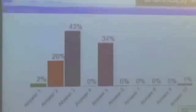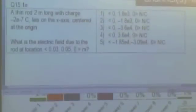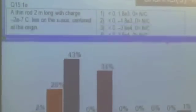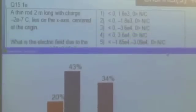Okay, so we have a number of different answers. Three is popular: negative 0, negative 3.6 times 10 to the 4, 0 newtons per coulomb. Two is popular, and five is popular.